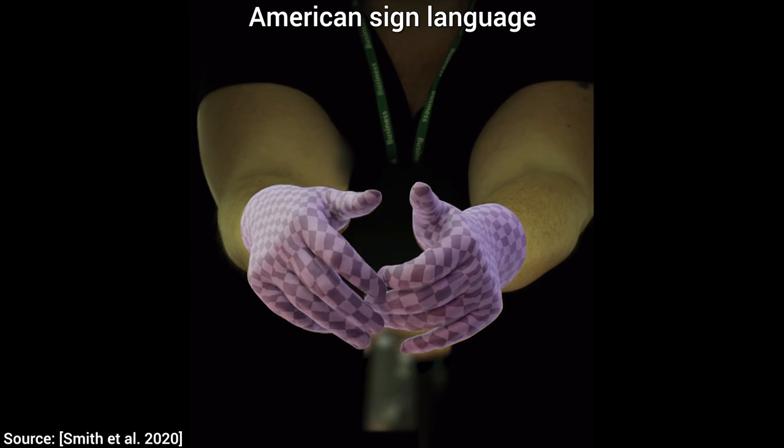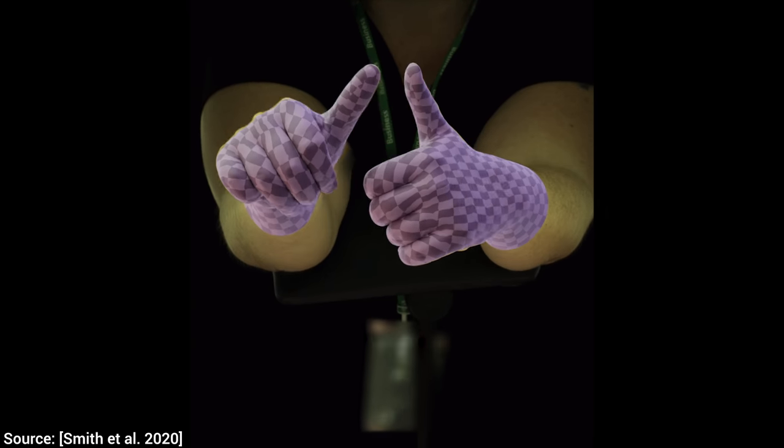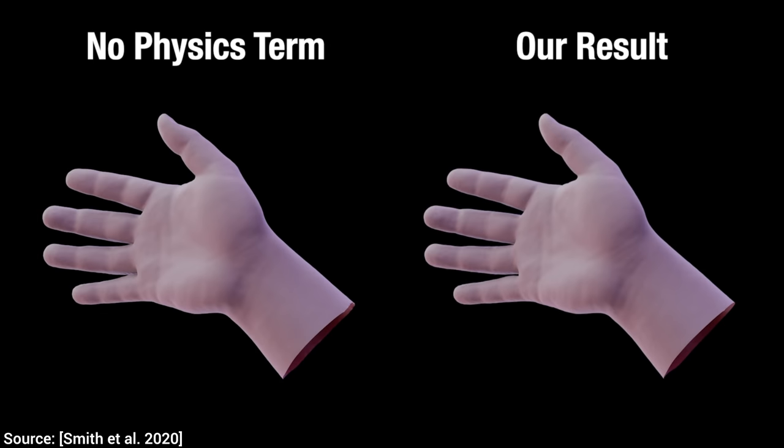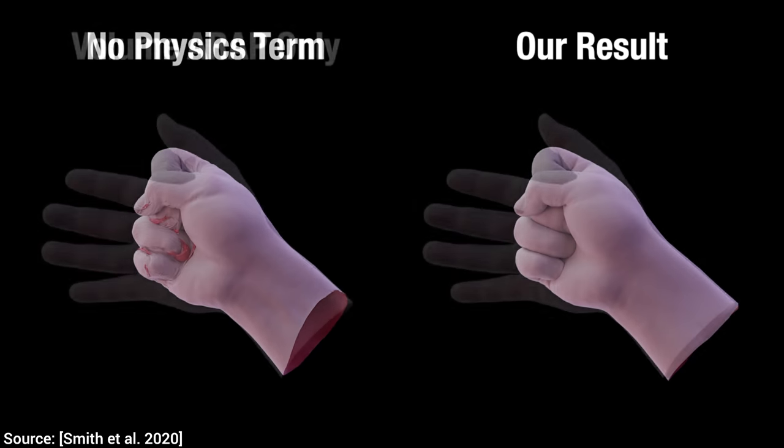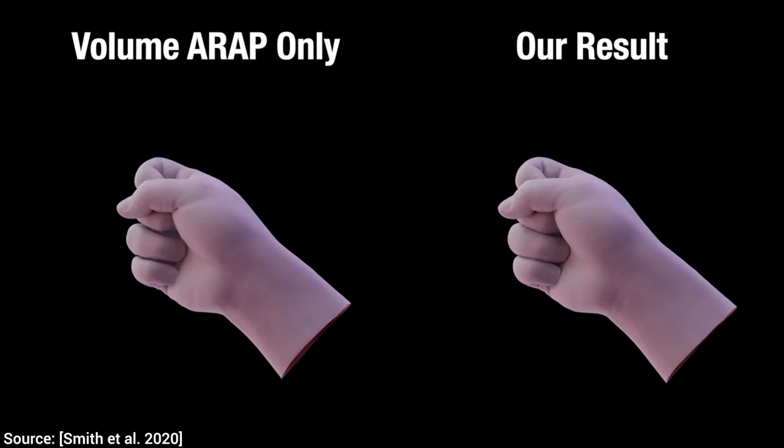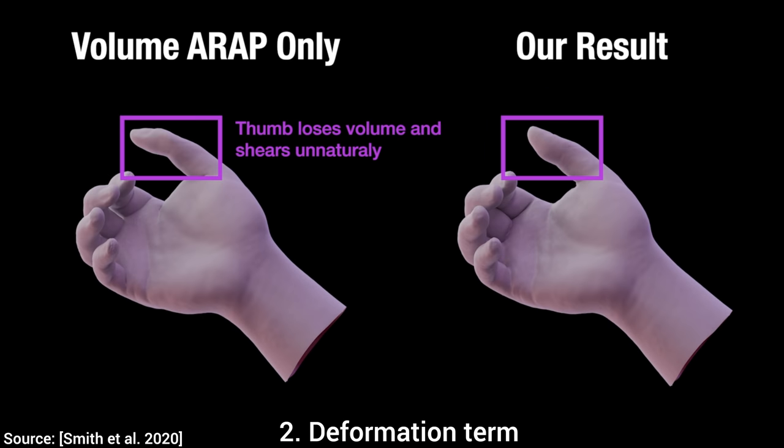Let's look at five ingredients that are paramount to getting an output of this quality. Ingredient number one, is the physics term. Without it, we can't even dream of tracking self-occlusion and contact properly. Two, since there are plenty of deformations going on in the input footage, the deformation term accounts for that. It makes a huge difference in the reconstruction of the thumb here.